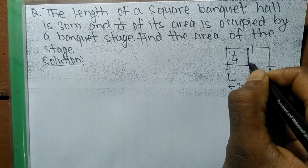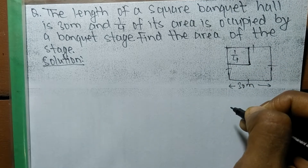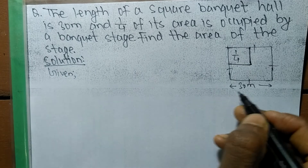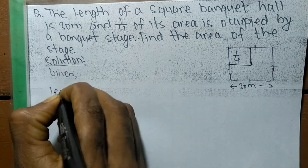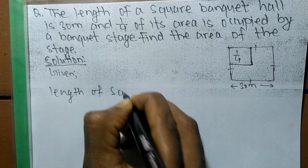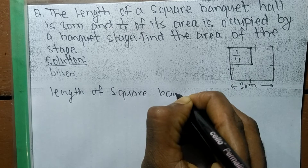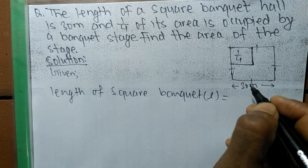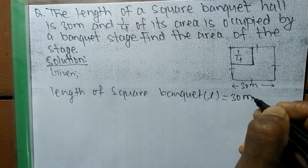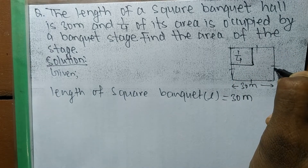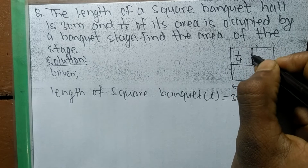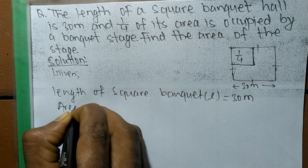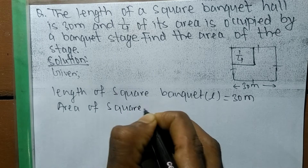To solve it, first we write what is given. Given: the length of the square banquet hall, which we denote by L, is equal to 30 meters. The shape of the banquet is a square, and the shape of the stage is also a square. So first we find out the area of the square banquet.